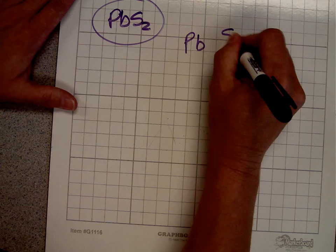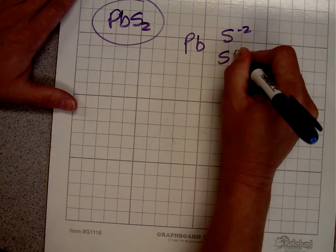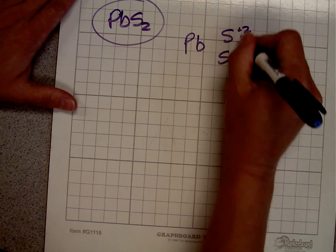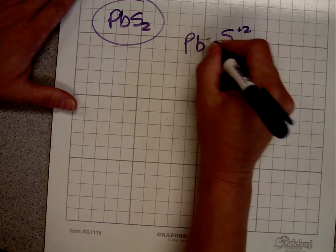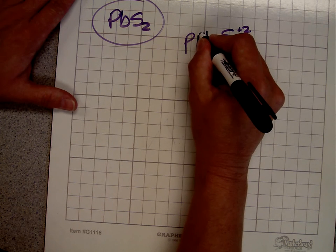See, what you have is Pb, S and S, and this one gives a negative two. I'm sorry, this one gives two, and this one gives two, so our total is four. So that has to be a four on that one.